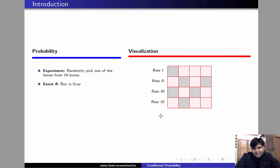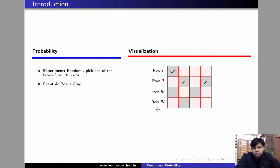Suppose the event of interest is event A, and the description of that event is that the box is gray. What is the probability of this event? Probability of event A can be easily computed by counting the total number of gray boxes in the grid and dividing it by the total number of boxes. So there is one gray box in row 1, two gray boxes in row 2, two gray boxes in row 3, and one gray box in row 4. So in total we have six gray boxes, and the probability of event A is 6 by 16.